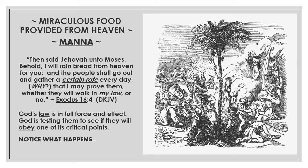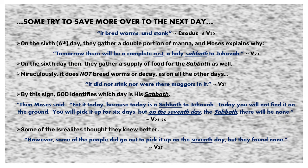Some tried to save manna over to the next day, and it bred worms and stank. On the sixth day, they gathered a double portion of manna, and Moses explained why: 'Tomorrow there will be a complete rest, a holy Sabbath to Jehovah.' On the sixth day, they gathered a supply of food for the Sabbath as well. Miraculously, it did not breed worms or decay as on all other days — it did not stink, nor were there maggots in it. By this sign, God identified which day is his Sabbath. Moses then said, 'Eat it today, because today is a Sabbath to Jehovah. Today you will not find it on the ground. You will pick it up for six days, but on the seventh day — the Sabbath — there will be none.'